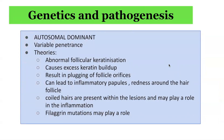In terms of the underlying genetics and pathogenesis, it is an autosomal dominant condition with variable penetrance. Some theories to explain the phenotype of keratosis pilaris include abnormal follicular keratinization, which causes excess keratin buildup and plugging of the follicle orifices. This can then lead to inflammatory papules and redness around the hair follicle. Coiled hairs are often present within lesions and may play a role in furthering the inflammation.